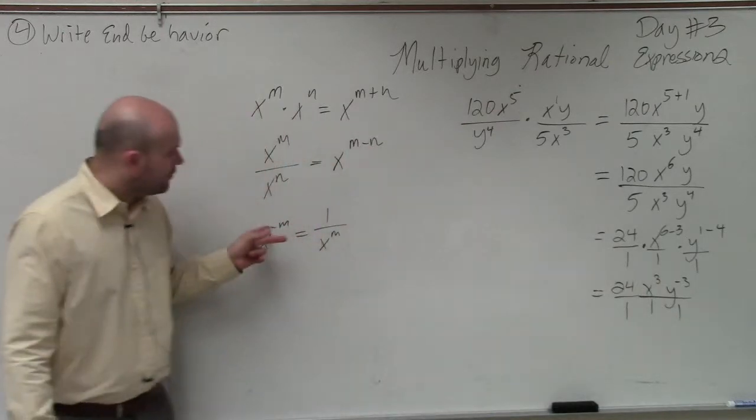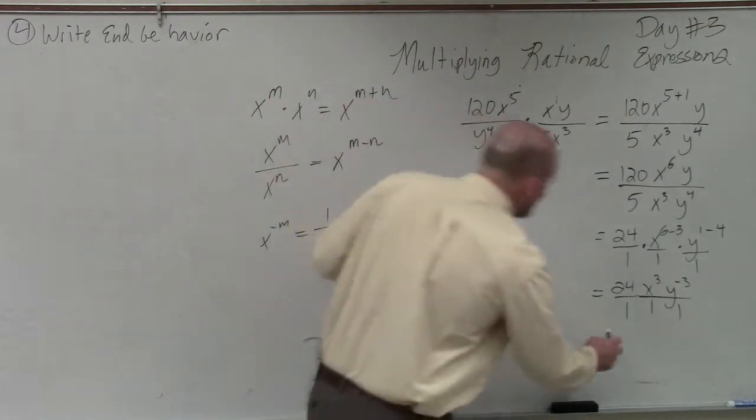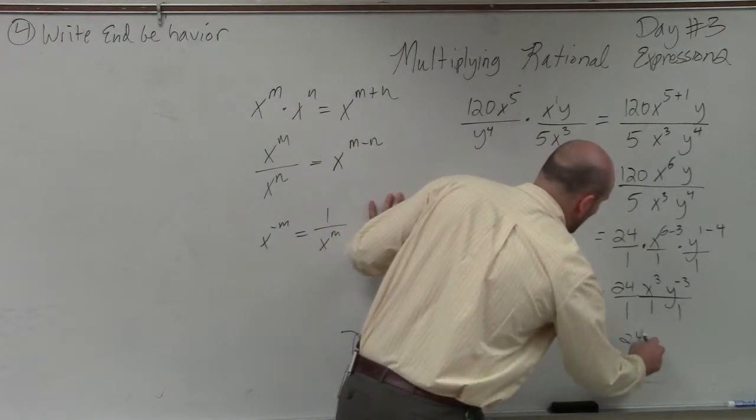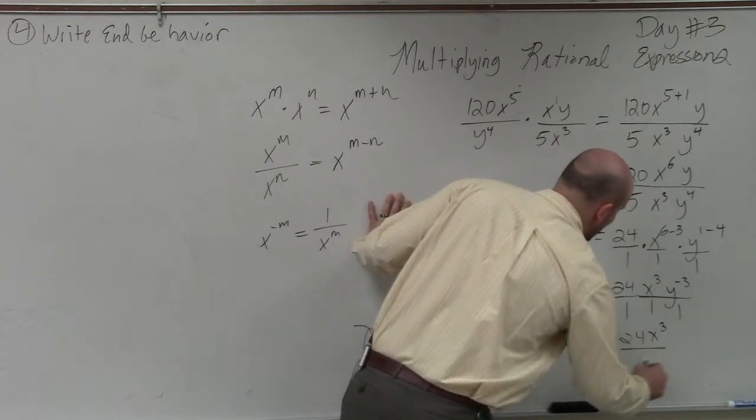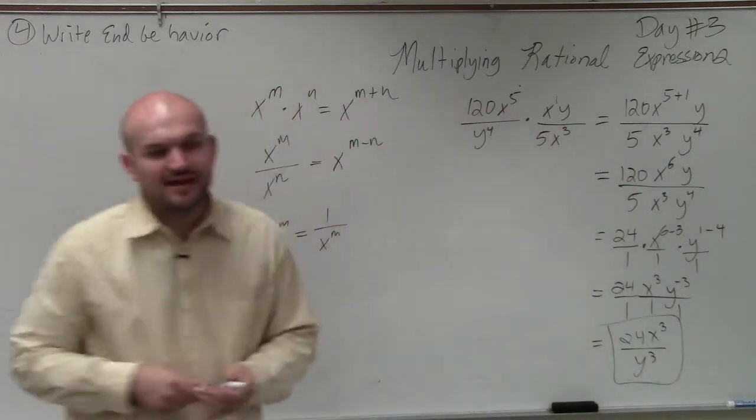Now, since my y is negative, where should I put that y to the negative 3? In the denominator. Denominator. So my final answer is 24 x cubed divided by y cubed. That is my final simplified answer.